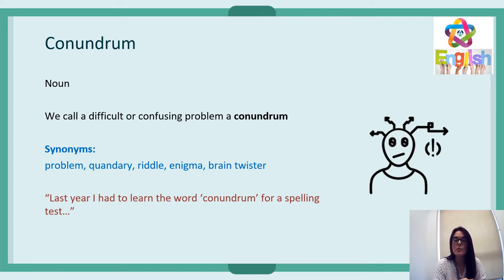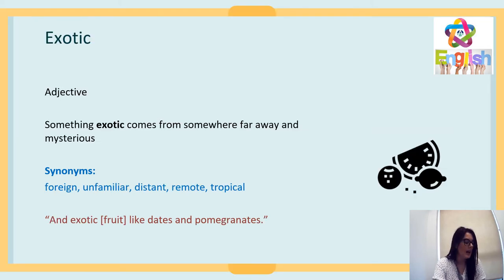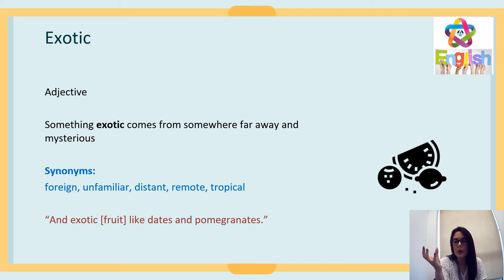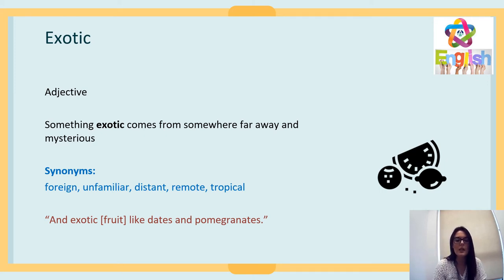Last year I had to learn the word 'conundrum' for a spelling test. And the word 'exotic' — that's an adjective. Something exotic comes from somewhere far away and mysterious; it's something you won't typically find in England. Synonyms for exotic are foreign, unfamiliar, distant, remote, tropical. Examples of exotic fruit include dates and pomegranates — pomegranates have become quite important in this novel. Go to your vocab sheets and use those words in sentences of your own before we move on. Pause the video now.